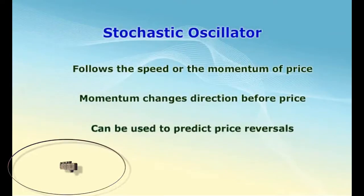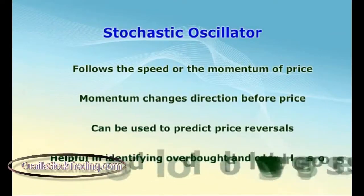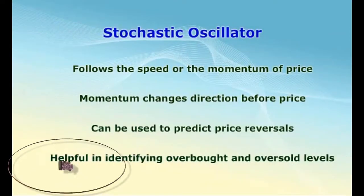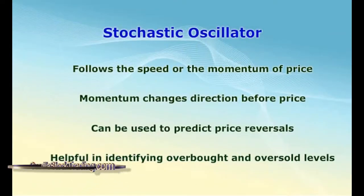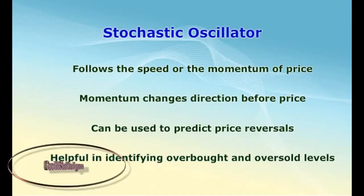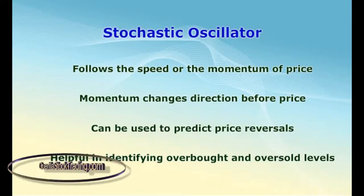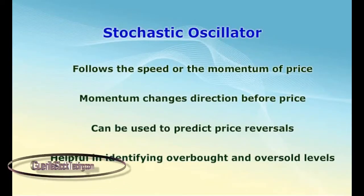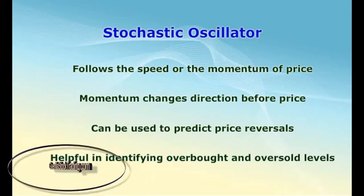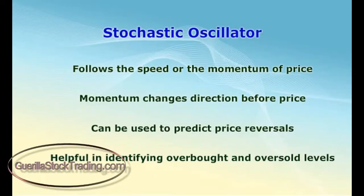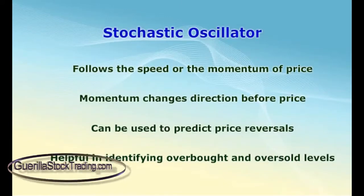This was the first and most important signal that Lane identified. Lane also used this oscillator to identify bull and bear setups to anticipate a future reversal. Because the stochastic oscillator is range-bound, it is also useful for identifying overbought and oversold price levels.